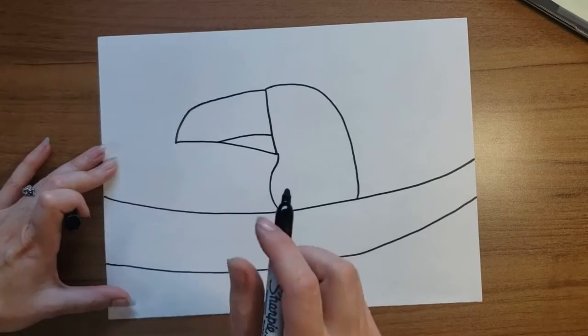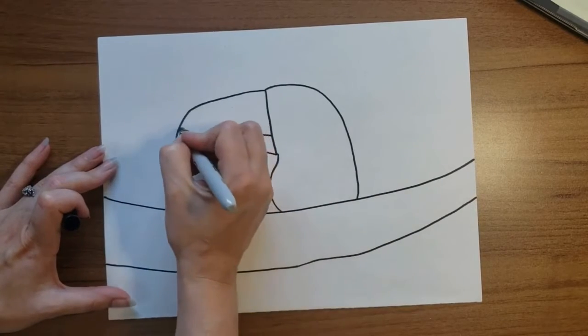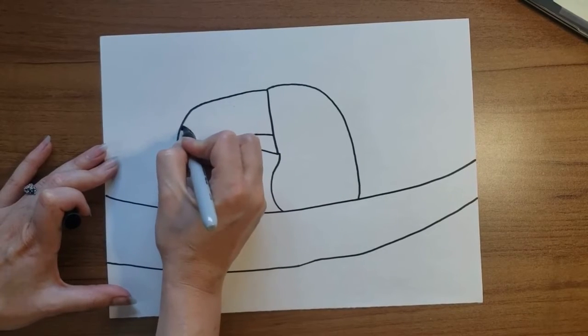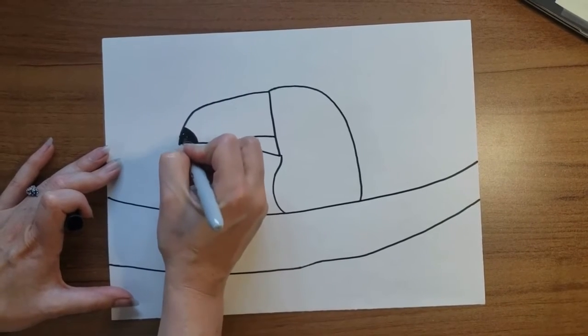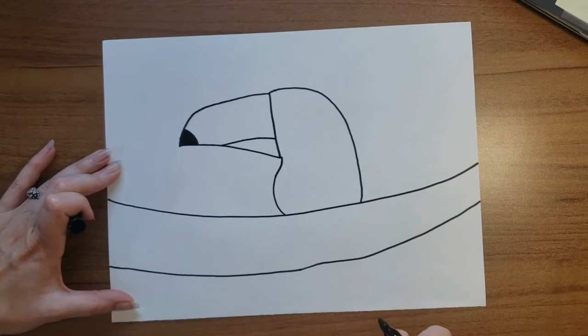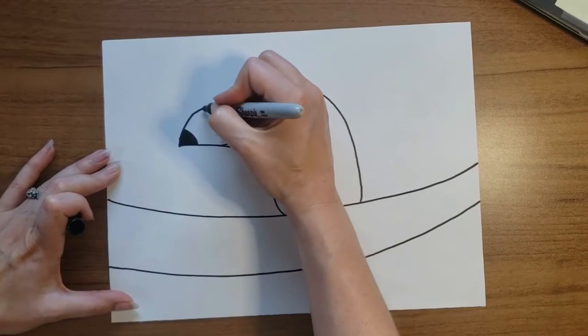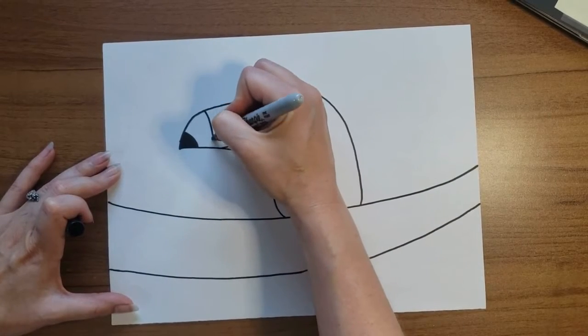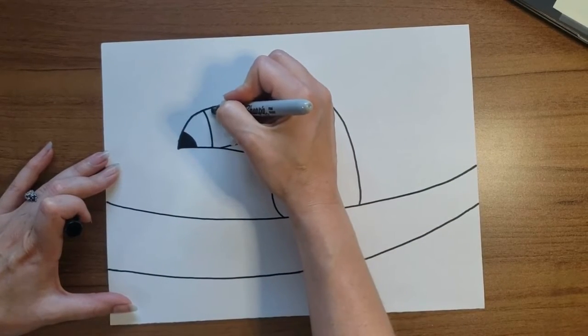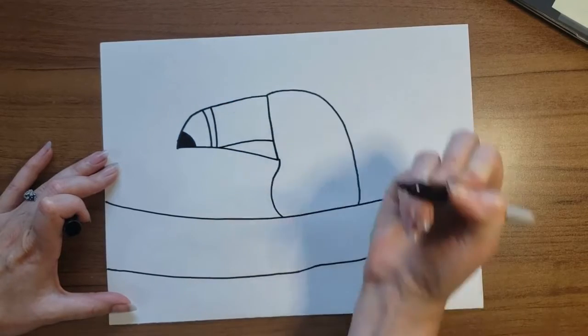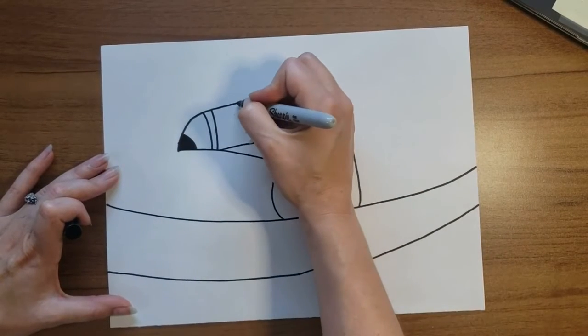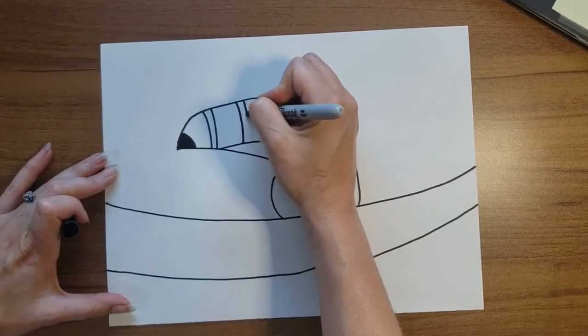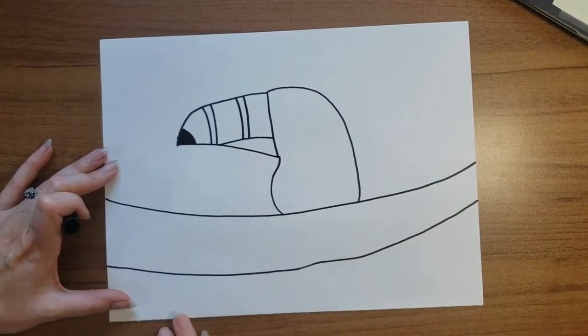Now my toucan is going to have a stripey beak. Usually toucans have a black tip on their beak so I'm going to give him that, and I can color that in right now with my sharpie. Then I'm going to add those stripes. Start at the top of my toucan's beak and come to the bottom, then close that stripe by giving it a line very close to that first one. I want another stripe farther back so the same thing, just two parallel lines.